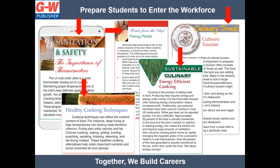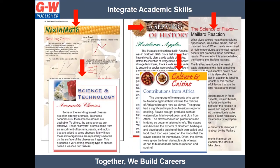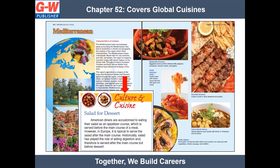Additional features include sanitation and safety, hints from the chef, culinary trends, nutrition connection, and sustainable culinary. Features focusing on academic skills and cross-curricular instruction include mix-in math, a serving of history, the science of flavor, science and technology, and culture and cuisine. Culture and cuisine talks about the role traditions and culture play in different cuisines. We also have an entire chapter devoted to different world cuisines.